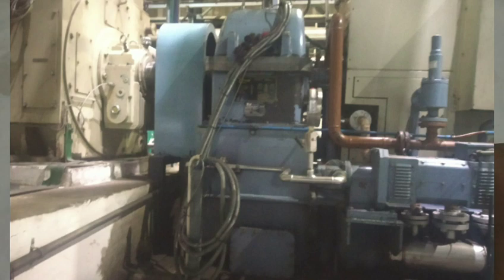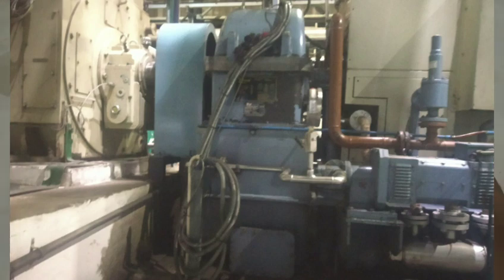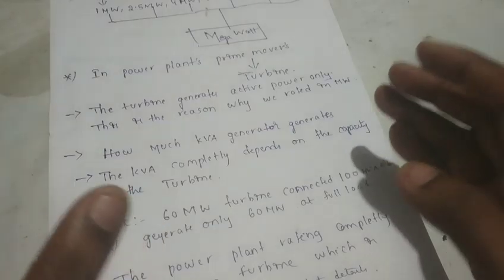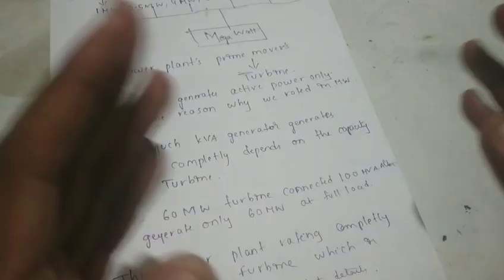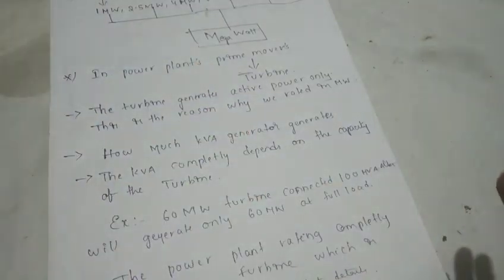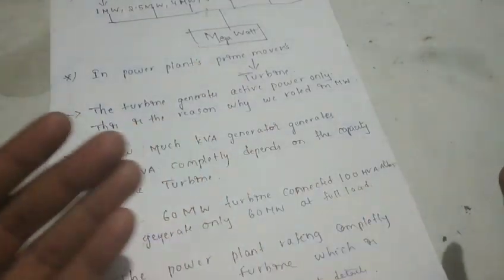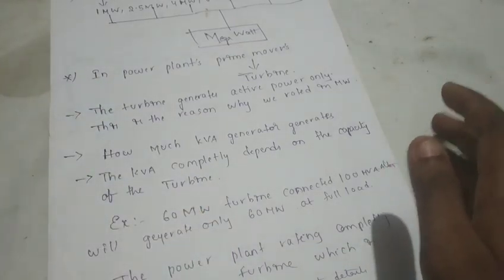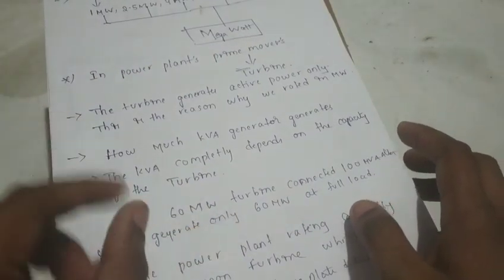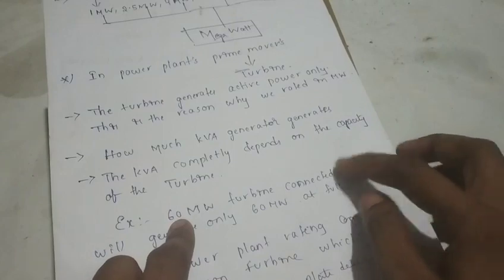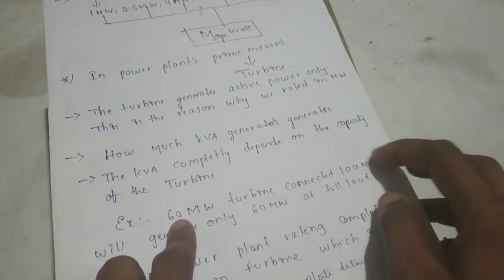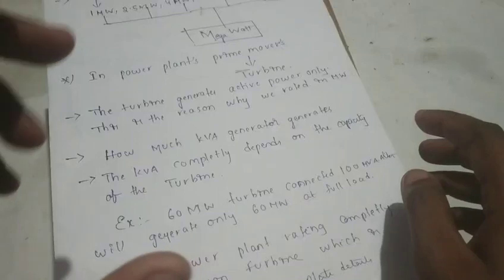If there is a 60 megawatt turbine, it will pair with a 100 MVA alternator, but it will only generate 60 megawatt. So the 60 megawatt design turbine is designed to generate only 60 megawatt. If there is any MVA or any kVA rating, it depends on the turbine capacity.